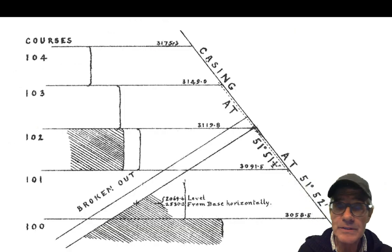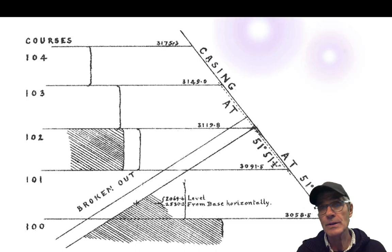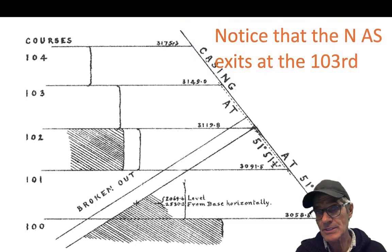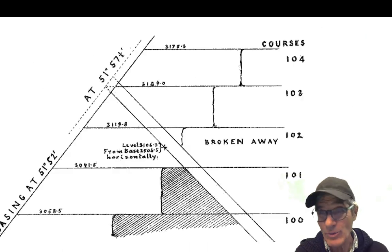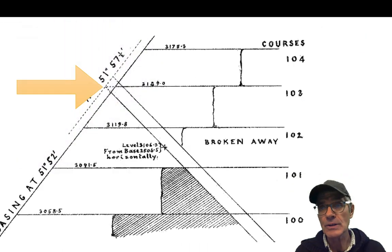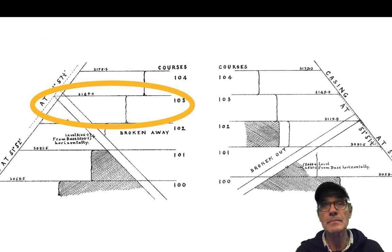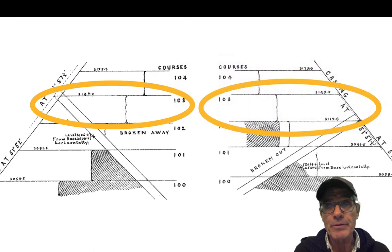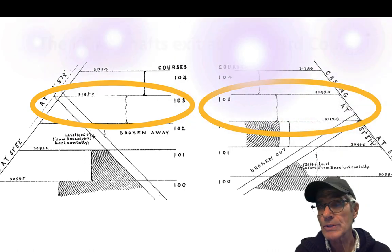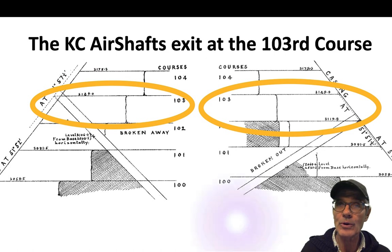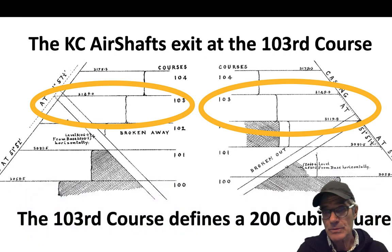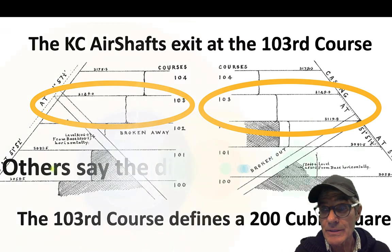Here's Flinders Petrie's diagram of where the north air shaft exits, and you can see that it exits at the 103rd course. Let's look at the south exit, and you can see also that the south exit exits mostly in the 103rd course. You've got the south exiting at the 103rd course, the north exiting at the 103rd course. The 103rd course defines a 200 cubit square.